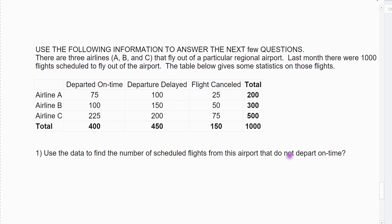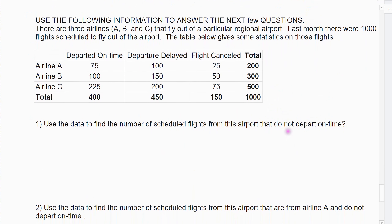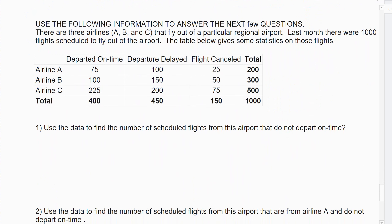The second table example has an airline that looked at a thousand flights. There's airline A, airline B, and airline C, with totals — A, B, C adding up to a thousand. They're broken down by whether they departed on time, were delayed, or were outright cancelled. Those are the categories we're looking at.